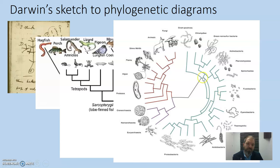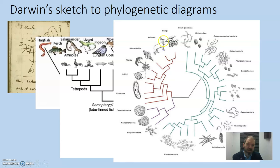The first two splits give us bacteria, archaea, and eukaryotes. Then there is a split between the archaea and the eukaryotes — everything on the red branch is eukaryotes. You can see plants and algae split from slime molds, animals, and fungi, with animals and fungi having the most recent common ancestor. From there, all the different animals diversify, and you could have sub-branches that look more like the earlier diagrams.